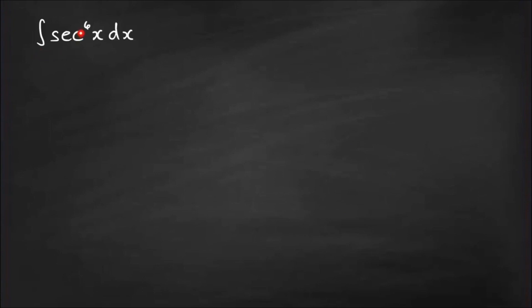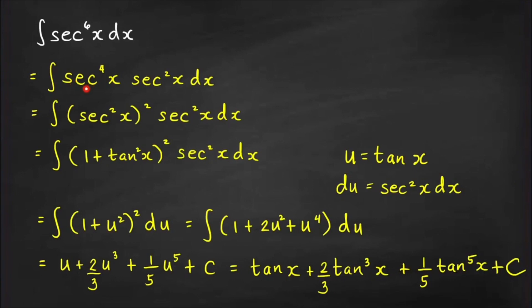Last problem: evaluate ∫sec⁶x dx. Sometimes we need to use trigonometric identities before substitution. We write sec⁶x as sec⁴x · sec²x dx, with the goal of expressing sec⁴x as a polynomial in tan x. We write sec⁴x = (sec²x)² = (1 + tan²x)², using the Pythagorean identity.